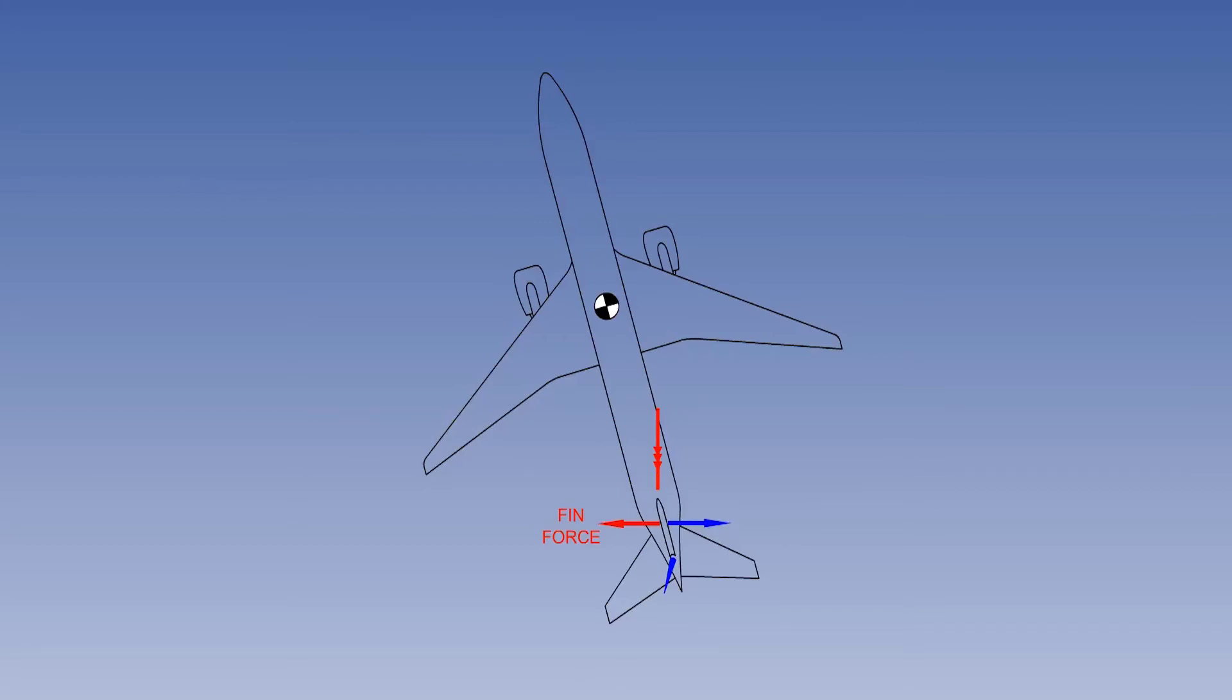When the fin force equals the rudder force, the aircraft will stop yawing about the normal axis, and a steady sideslip angle will exist. The aircraft is not turning, it is sideslipping, in this case, to the right.